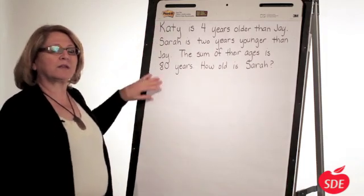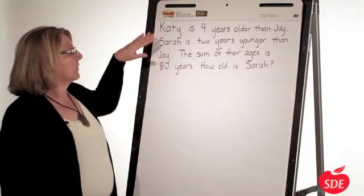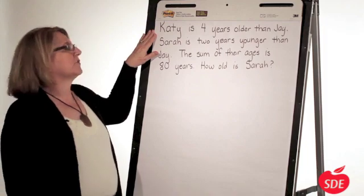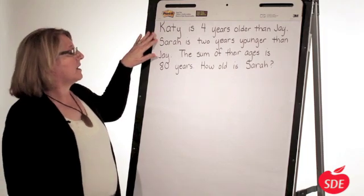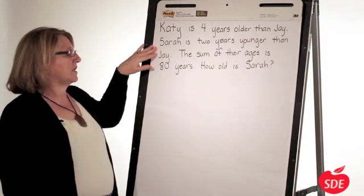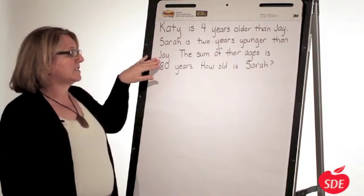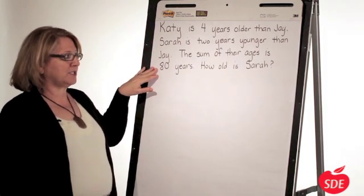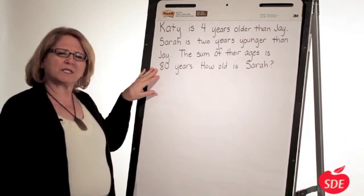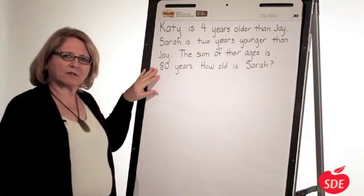First, we start by reading the problem. Katie is four years older than Jay. Sarah is two years younger than Jay. The sum of their ages is 80 years. How old is Sarah?